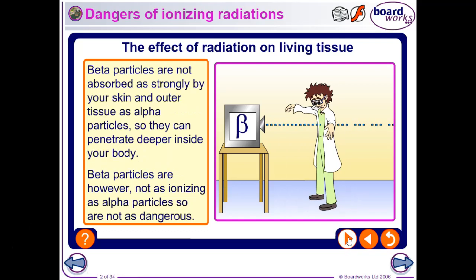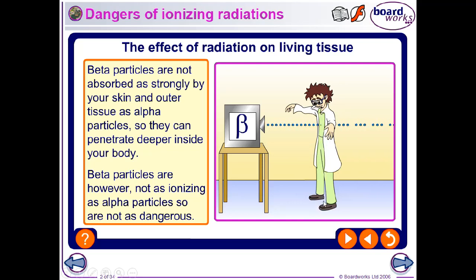Beta particles are not so strongly absorbed by skin and can penetrate deeply inside the body. Some of this radiation passes through, but quite a lot will be absorbed. Beta particles are not as strongly ionizing as alpha particles, so not as dangerous, but if the source is outside your body it can still affect living cells inside — this is the problem with a beta source.